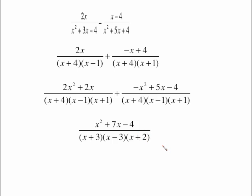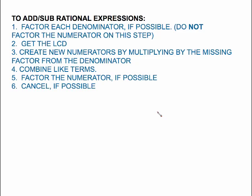Combine like terms: 2x² − x² = x², 2x + 5x = 7x, and then −4. The numerator x² + 7x − 4 does not factor, so we're finished. To summarize the steps: factor each denominator first (do not factor the numerator at this stage — that's a common mistake). Find the least common denominator. Create new numerators by multiplying by the missing factor. Combine like terms. Then factor the numerator if possible and cancel if possible. If denominators don't factor, skip straight to finding the LCD.